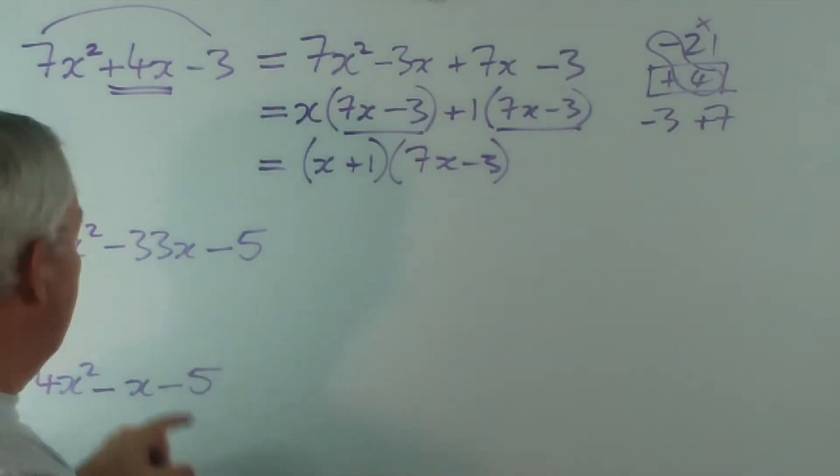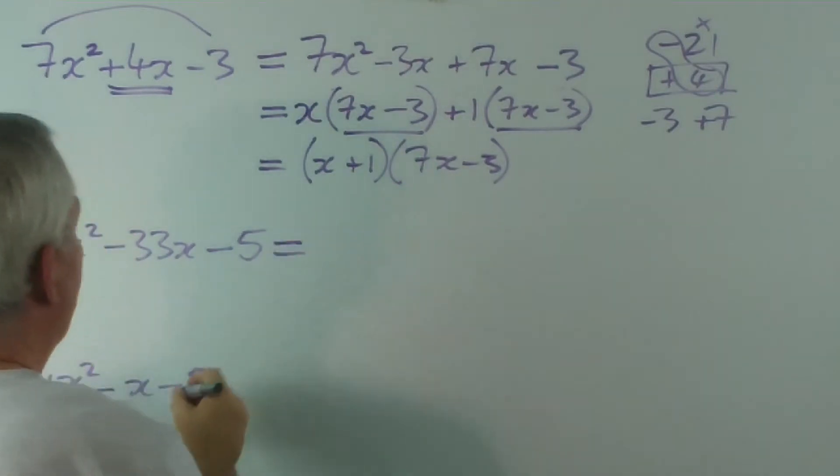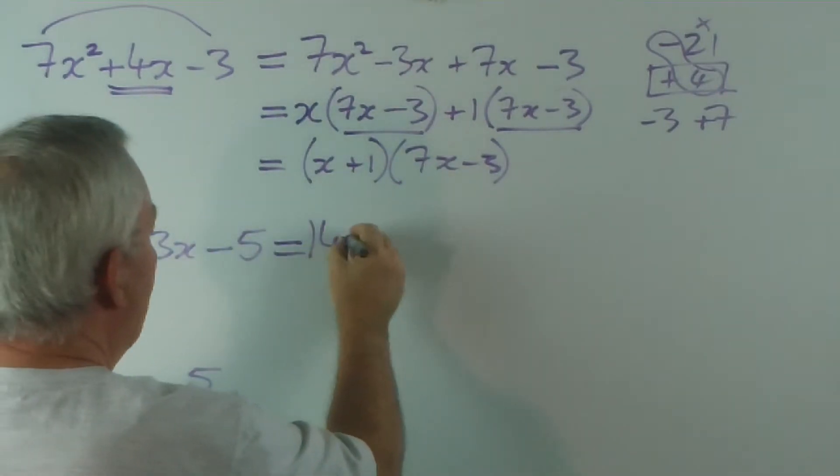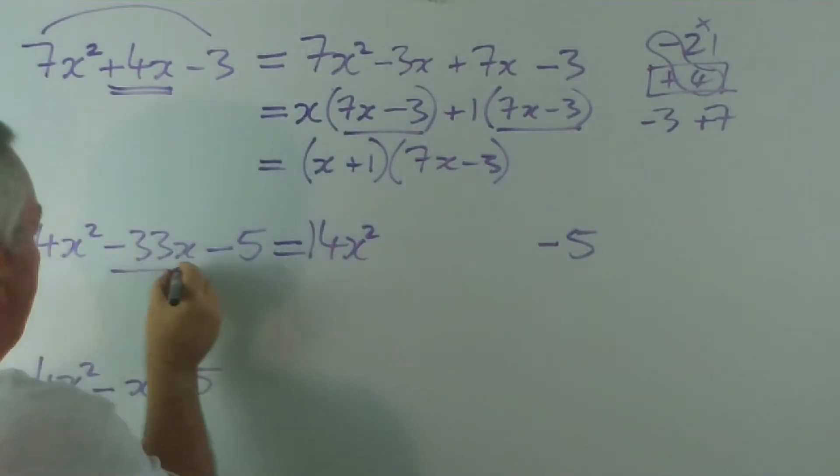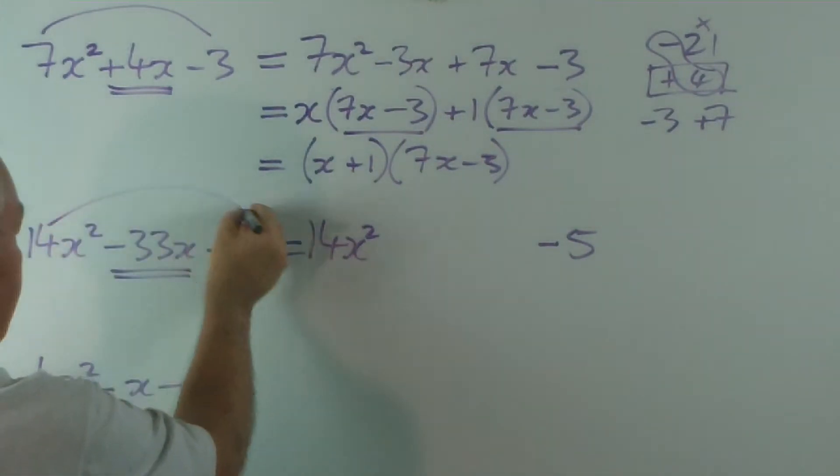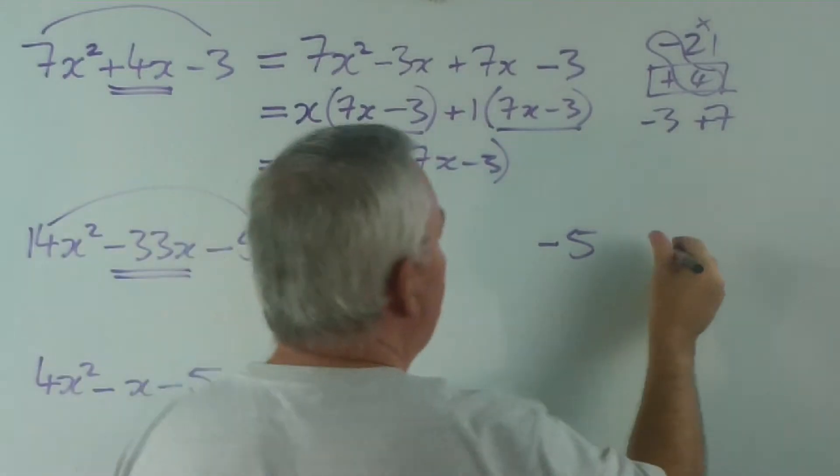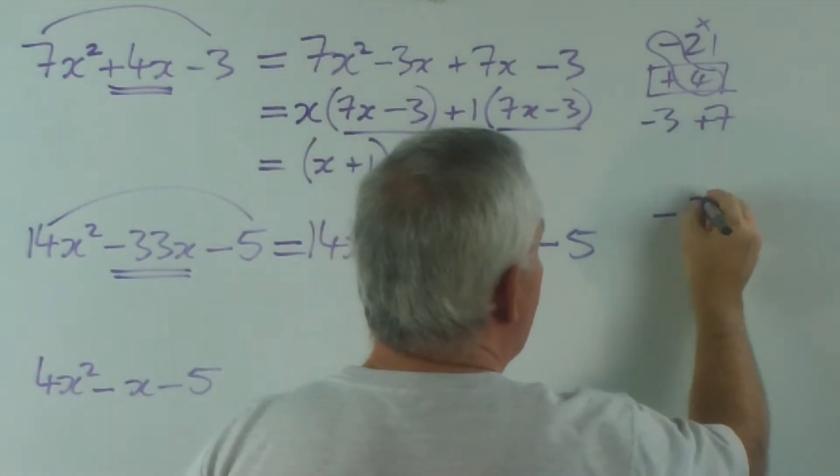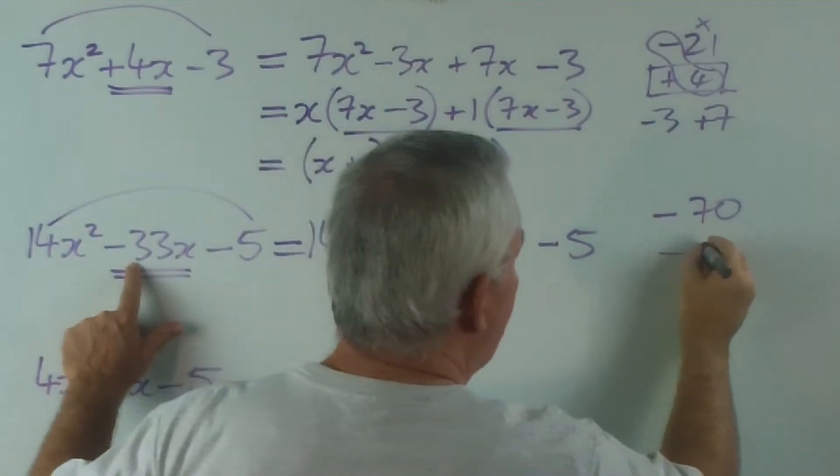Now, I will speed up a bit for these two. This one's much more difficult. You can see it's got large numbers. But let's have a look. We write the 14x squared, the minus 5, and we're going to break up the minus 33. Let's go through the process. 14 times minus 5 is minus 70, so we've got quite a large number. Underneath it, we write the minus 33.